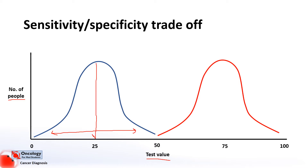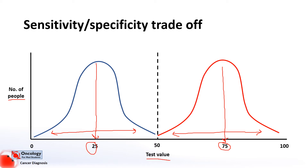The red curve represents what we would see with a perfect test. If we set our cutoff value at 50, 100% of people without the disease will test negative with a result under 50, and all of the people with the disease will test positive with a result above 50.